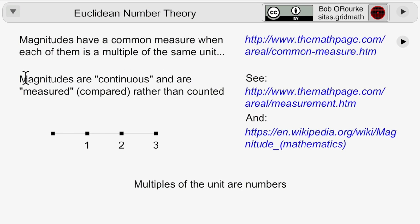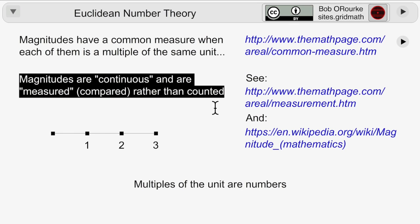Magnitudes were different from numbers. Numbers were discrete. Magnitudes were continuous. They were measured. Numbers are counted.